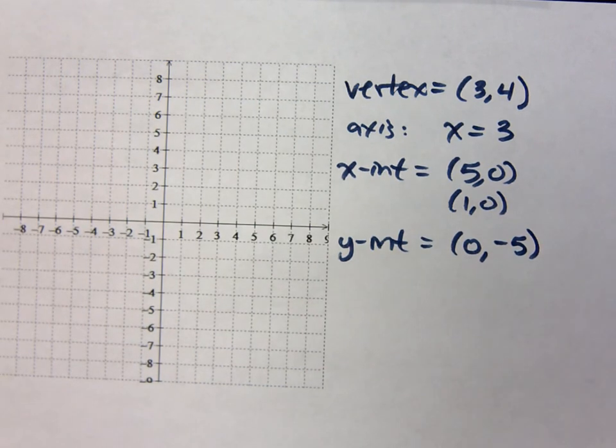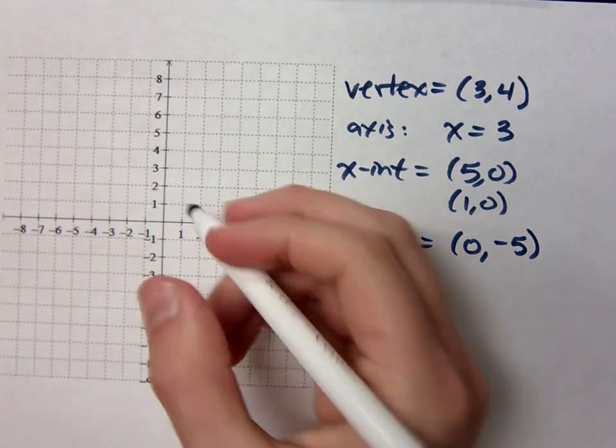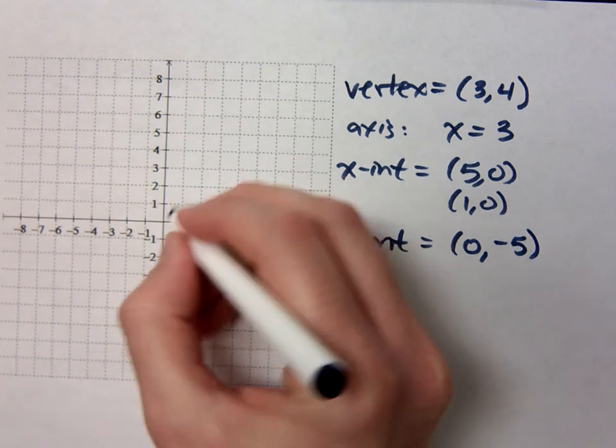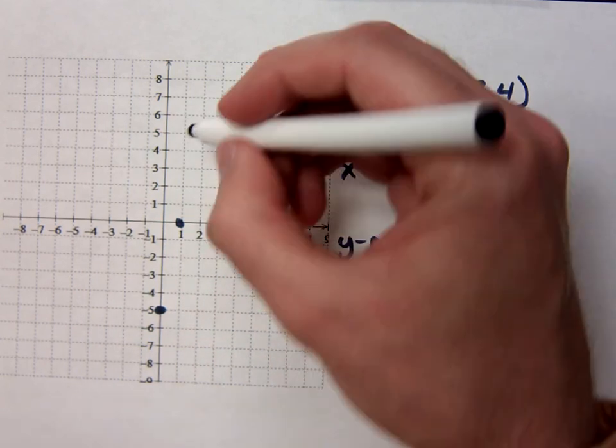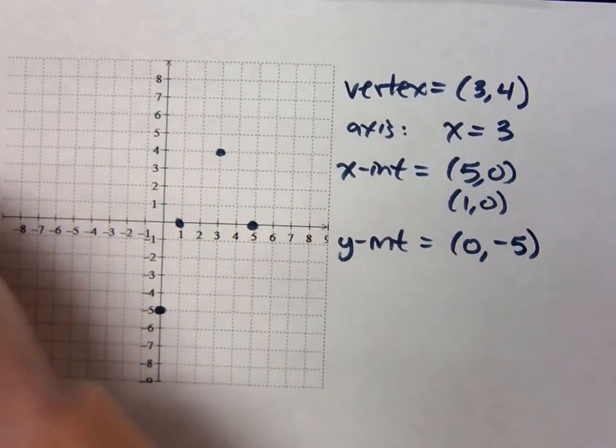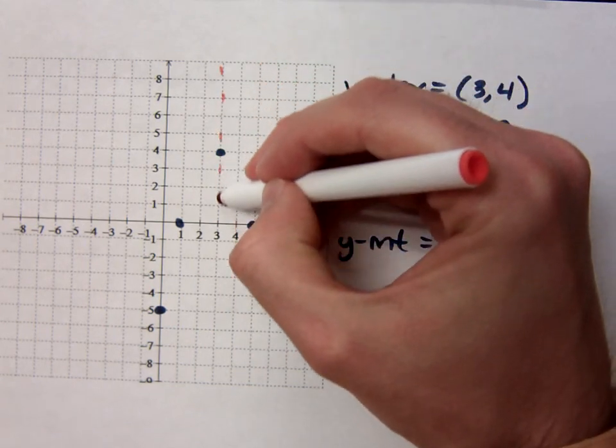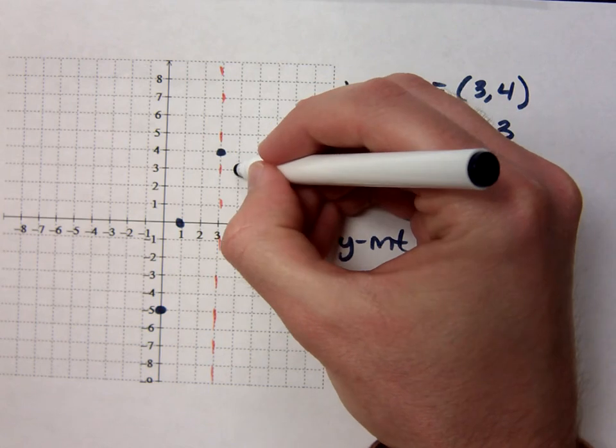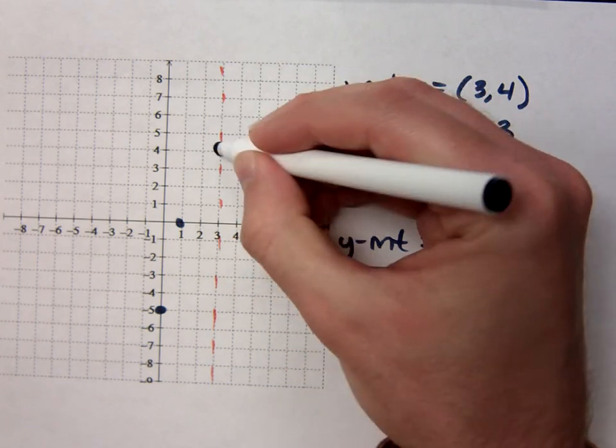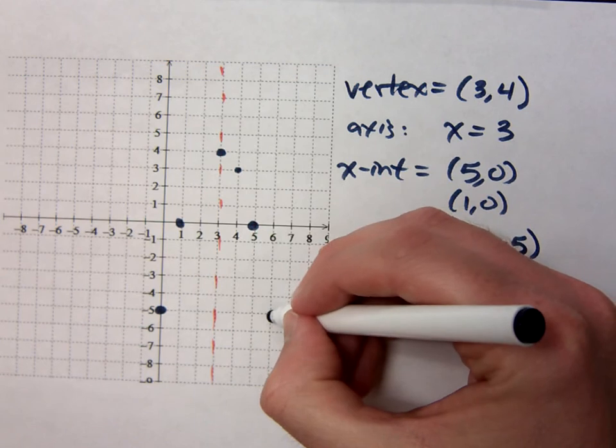Let's plot these and make sure they all line up correctly. Y-intercept is 0, negative 5. X-intercepts at 1, 0, 5, 0. And your vertex is at 3, 4. And you have an axis of symmetry that does this. Do you think I'm going to get a parabola here? The lead coefficient was negative 1. But that absolute value is just positive 1. So that means it's going to have the normal parabolic shape. So 1 squared is 1, 2 squared is 4, 3 squared is down 9, and so on.